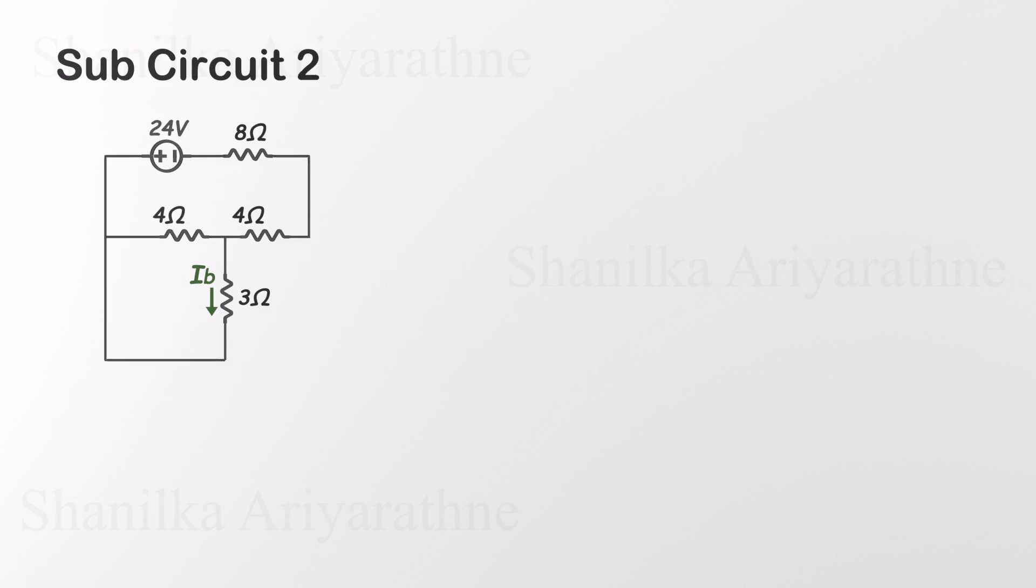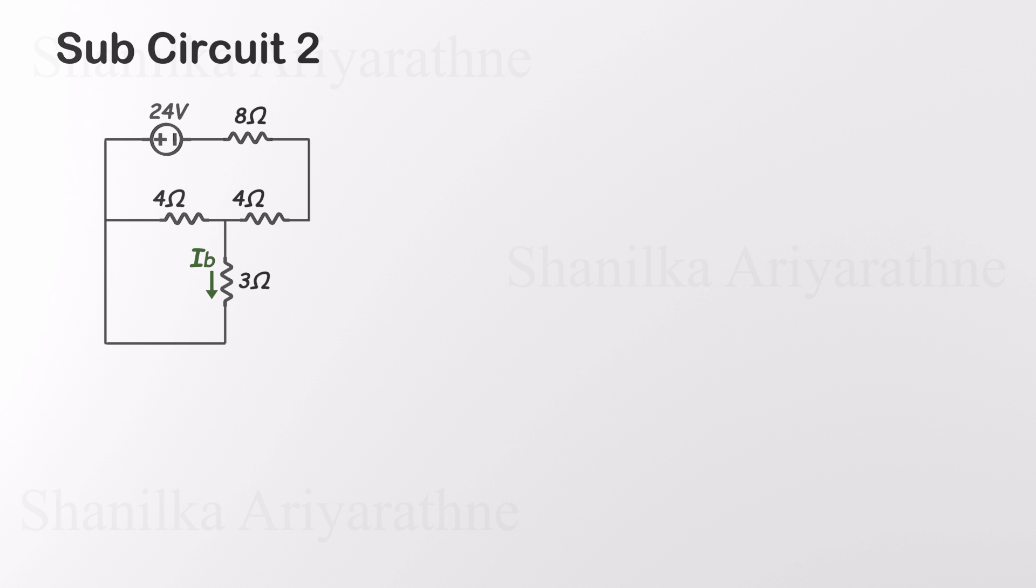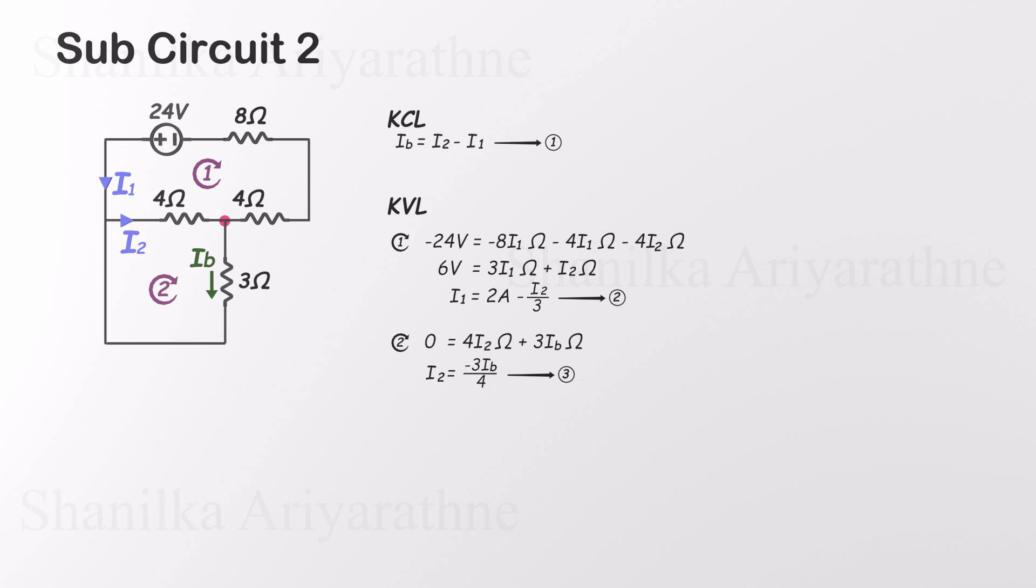Now let's move on to the second sub-circuit. We'll follow the same steps to solve for IB. First, label the currents through each branch. In this circuit, we again have three unknowns: IB, I1, and I2. So we'll need to build three equations using KCL and KVL. Starting with Kirchhoff's current law at the node, we get IB equals I2 minus I1. This is our first equation. Next, let's focus on the loops. There are two loops. In loop 1, applying KVL gives us I1 in terms of I2. Then in loop 2, we apply KVL again and get I2 in terms of IB. Now we've got the equations we need.